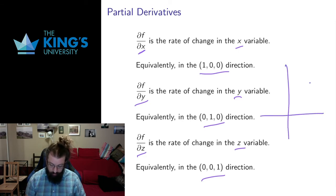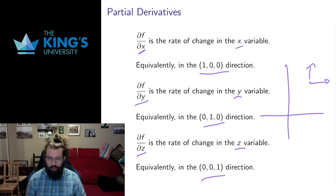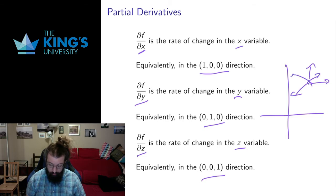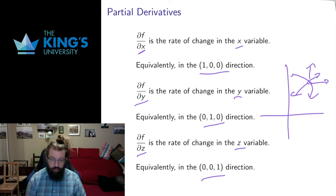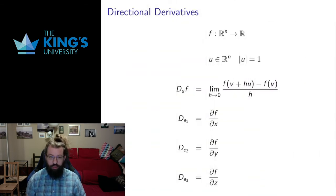If I'm thinking in R2, because I can draw it easily, I can move in the x direction or the y direction. But those are not the only directions I can move — I can move in all sorts of other directions as well. So why can't I ask for the rate of change in these directions? That's what leads us to the notion of a directional derivative.